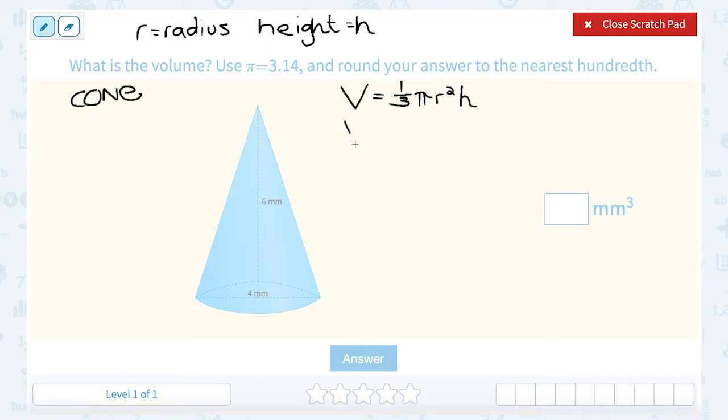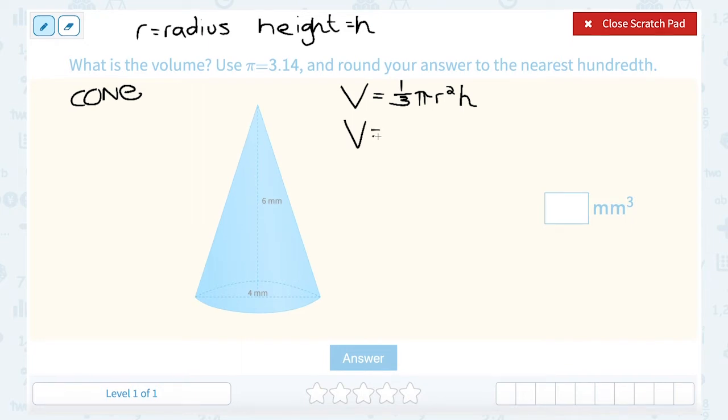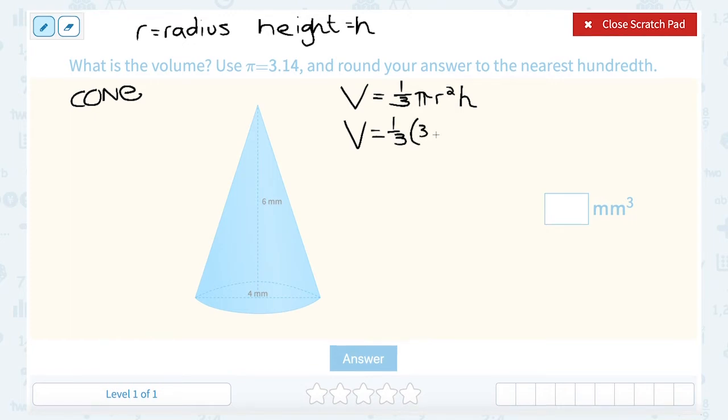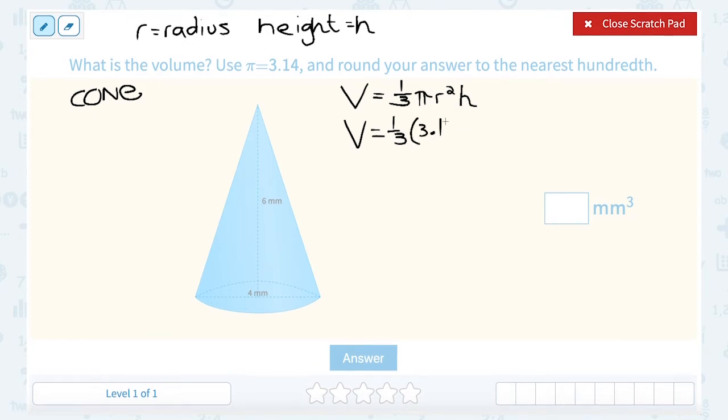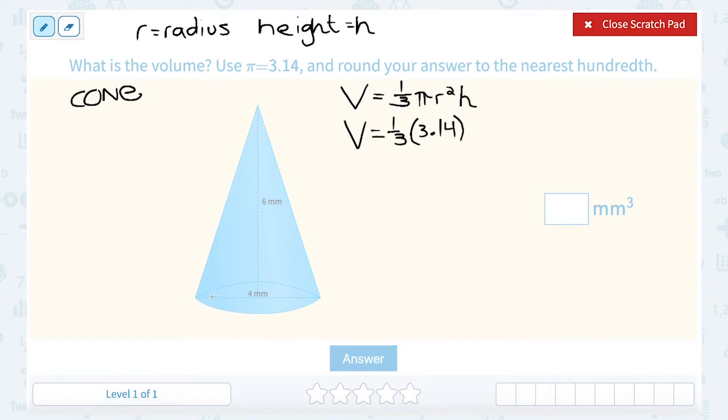And now I'm ready to plug my numbers in. So I'm going to say the volume is equal to one-third. Now they told us for pi to use 3.14. Now if I look at my diagram, remember the radius would be from the center of my circle to one edge. It looks like in this diagram, they gave us the measurement from edge to edge, which would actually be the diameter.